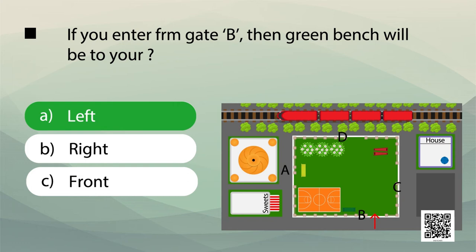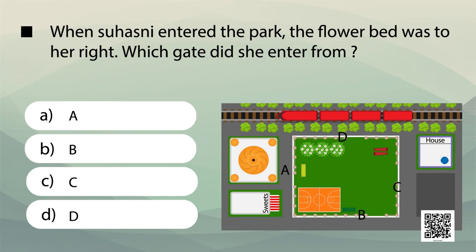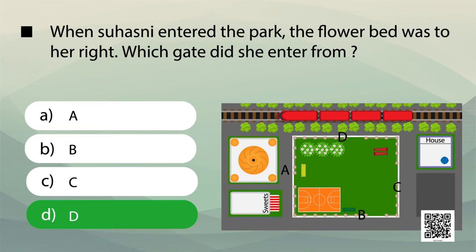Now another question: when Suhasini entered the park, the flower bed was to her right. Which gate did she enter from? Do you know which is your right hand and which is your left? Look at the picture and find out. The right answer to this question is gate D.